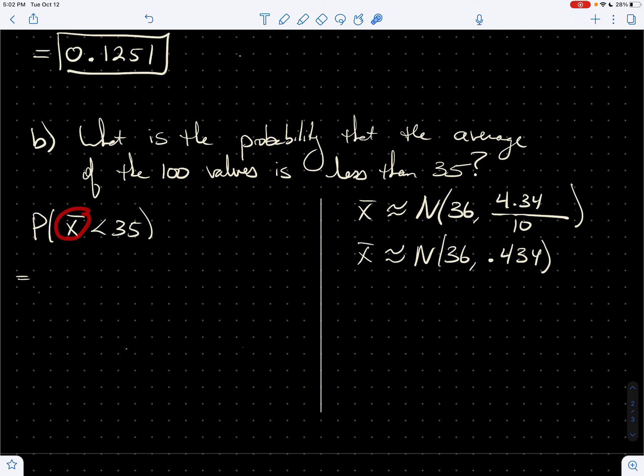I can standardize because as the samples vary, X bar has its own distribution and it's normal. And so I'm allowed to convert the, I can convert the normal distribution for X to the standard normal distribution by standardizing with Z scores. So I get the probability that Z is less than, okay, this is 35 minus 36, divide by 0.434.